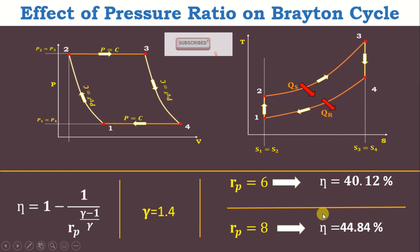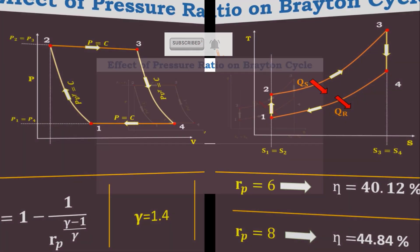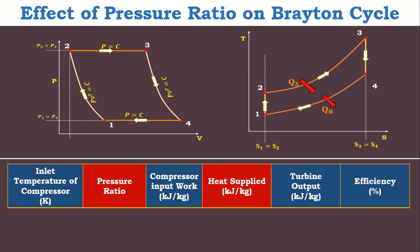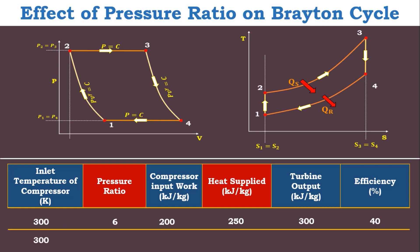Let's have an example. Here we have a table in which heat supplied is taken as constant. Changing the pressure ratio, let's see the effect on other parameters. The inlet temperature of the compressor is always constant at ambient conditions — let's take 300 K and pressure ratio as 6. To increase pressure from 1 bar to 6 bar, the compressor requires work of 200 KJ per kg of air. With heat addition constant at 250 KJ per kg, the turbine output becomes 300 KJ per kg and efficiency becomes 40%.